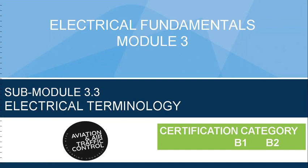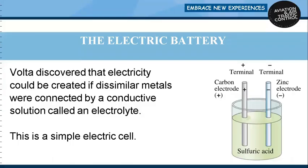The electric battery: in electricity, a battery is a device that consists of one or more electrochemical cells that convert stored chemical energy into electrical energy. A common dry cell battery is a zinc-carbon battery. The cell is made up of an outer zinc container which acts as the anode. The cathode is a central carbon rod surrounded by a mixture of carbon.